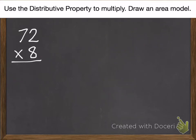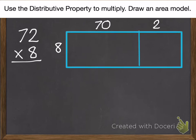One more example. I'm going to continue to use the distributive property and draw an area model to do that. So here's my model. I have my 8 on the side. I made my 72 a 70 and a 2. 8 times 2 is 16.